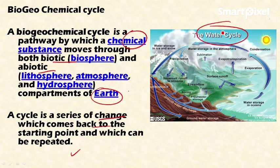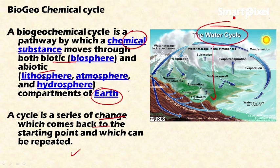For example, water falls to the earth in the form of rain, then moves as groundwater or runoff into the ocean, where it evaporates and condenses in the atmosphere, then comes back to the earth as rain. This is a cycle, and the same applies to all biogeochemical cycles.